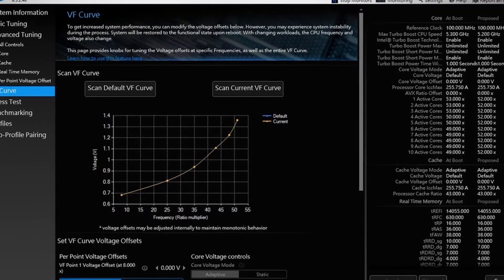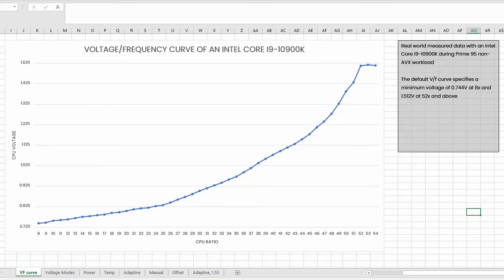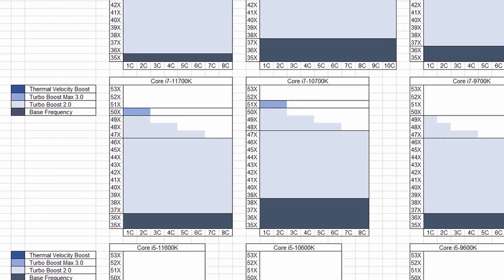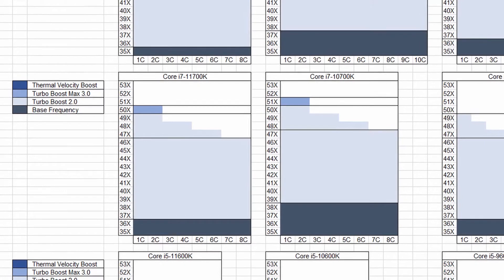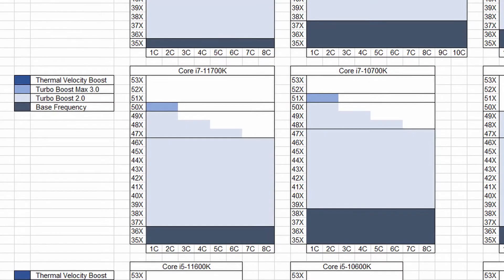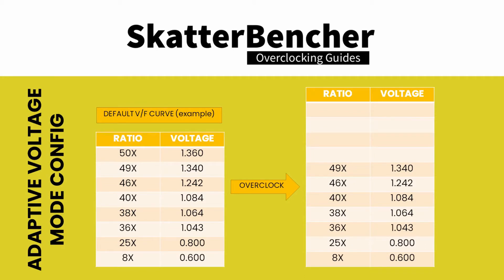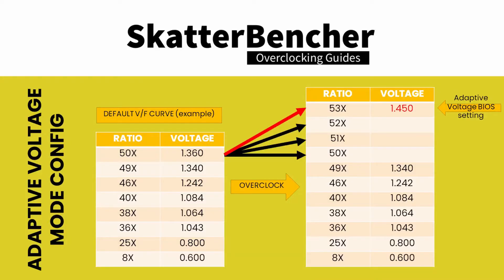Intel CPUs come with a factory-fused VF curve — Voltage Frequency Curve. For each ratio up to the default maximum Turbo Boost Ratio, Intel has specified a certain voltage. The Core i7-11700K has a default maximum Turbo Ratio of 50X. When using Adaptive Voltage Mode, we tell the CPU to follow the factory-fused voltages for all ratios of 50X and lower. However, for ratios above 50X, Intel uses one register to define the target voltage, so the voltage is interpolated. We set the adaptive voltage to 1.45 V for 53X. The estimated target voltages are: 1.368 V for 50X, 1.395 V for 51X, and 1.423 V for 52X.